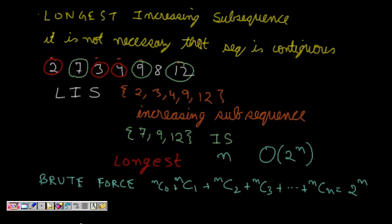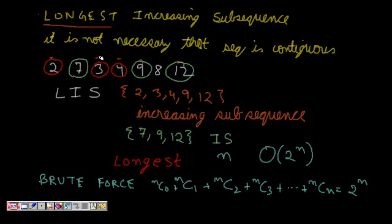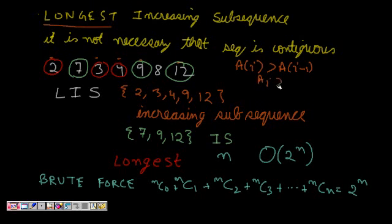Our problem today is the Longest Increasing Subsequence. It means that given a sequence of numbers, I have to find an increasing subsequence — basically I will choose a subset of these numbers that is increasing in itself. For all numbers, a[i] should be greater than a[i-1], or more generally a[i] should be greater than a[j] if i is greater than j.